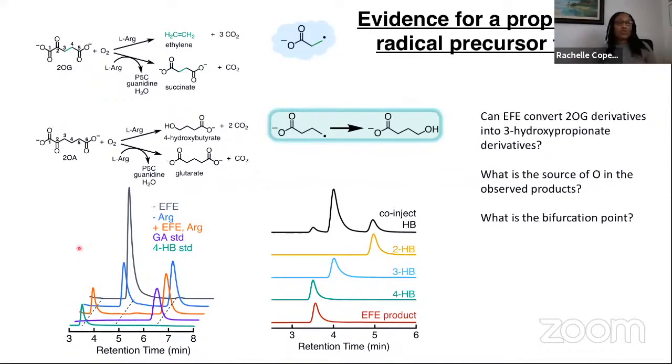Currently we are working on seeing whether other 2-OG derivatives can make hydroxypropionate derivatives. We are looking into the source of oxygen in the observed product. And by answering these questions, we are getting pretty close to identifying what the actual branch point intermediate is.